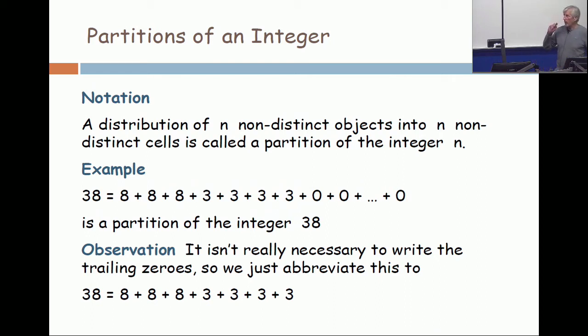Now let's move on and talk about partitions of an integer. In the last example we could tell the difference between the parts. Now we're going to blur them. A distribution of n non-distinct objects into n non-distinct cells is called a partition of the integer n.